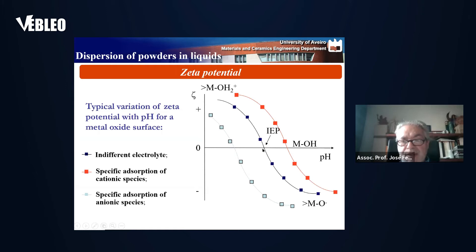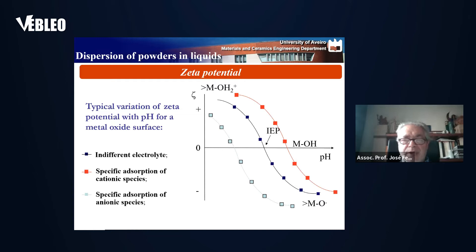Imagine we have a powder with a given isoelectric point. If cationic species are adsorbed, the electrophoresis curve will shift to the right, while in the presence of specific adsorption of anions, it will shift to the left. So we can take advantage of this to select a given pH, play with this presence to promote the shifts, and select the right pH range for processing.